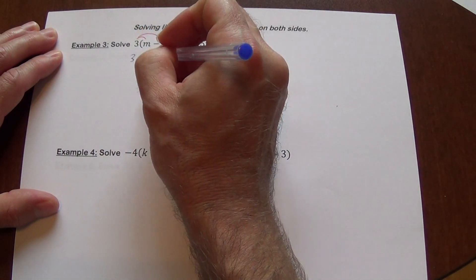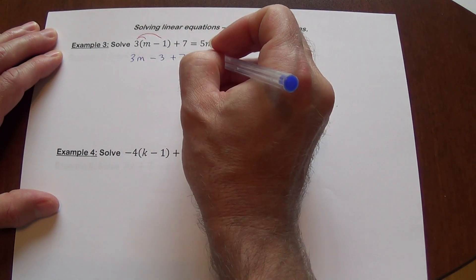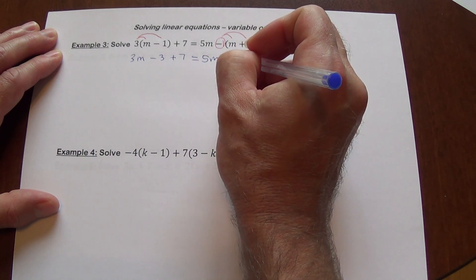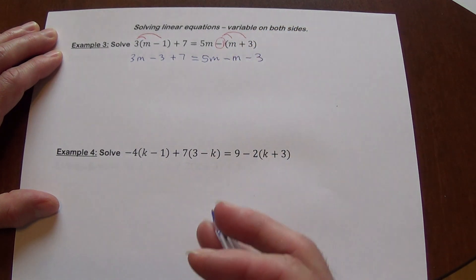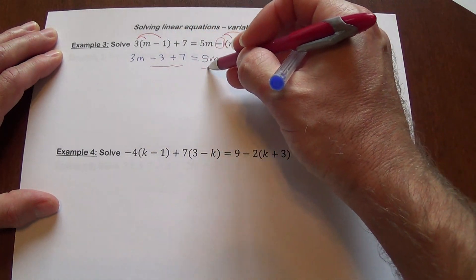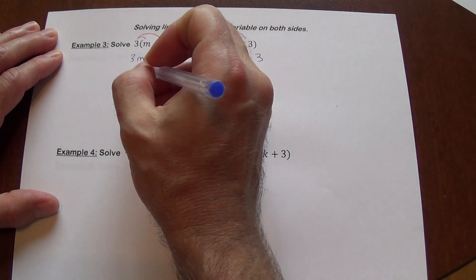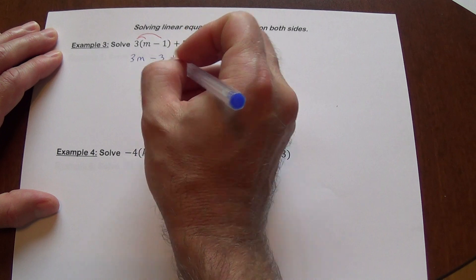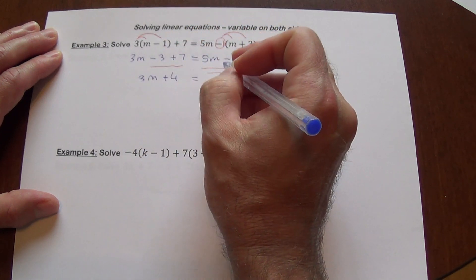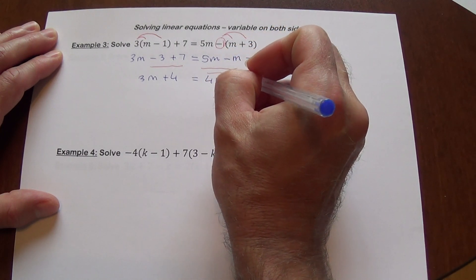So let's take a look. It gives us 3m minus 3, still plus 7, we distribute this right there, equals 5m. Now we are distributing negative 1. So minus m minus 3. We have a few sets of like terms. We have these two here and we have these two here. So 3m, we got negative 3 plus 7, 3m plus 4. On this side we are going to get 5m minus m, that's minus 1m, which is 4m minus 3.